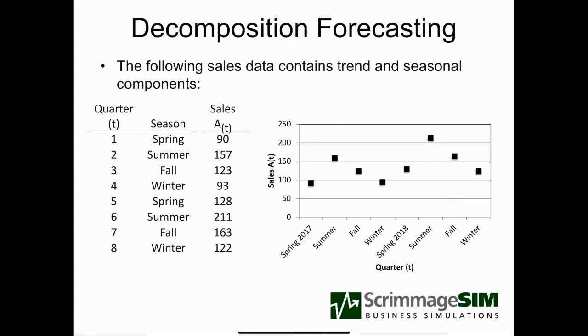Here we have some data — we need two years worth of data to initialize this model. When we look at the data, we need to think about what quarter or period we're talking about: periods 1 through 8, which will be used in regression. We also have to think about the season — spring, summer, fall, or winter — so we can adjust the data up or down when we forecast. This is a summer product, so summer sales are much higher than sales in winter.